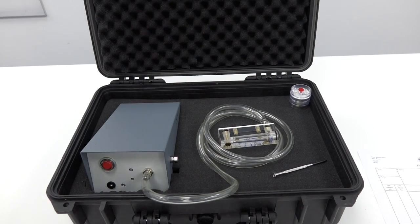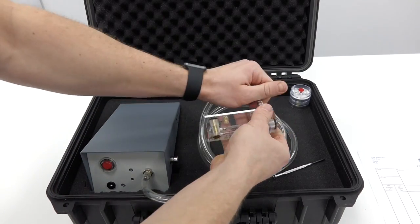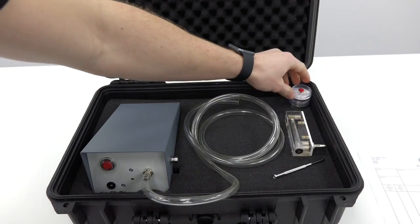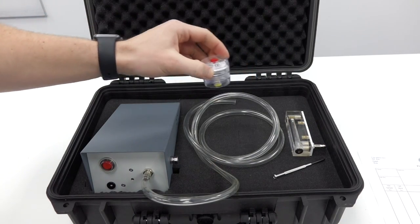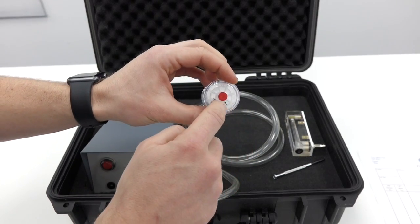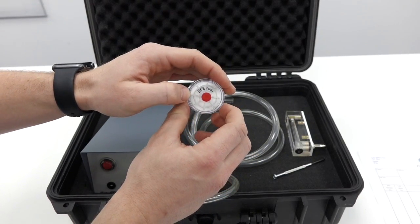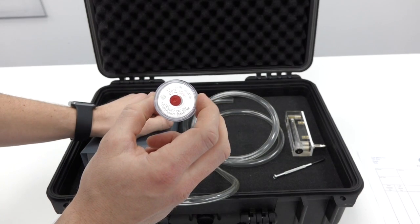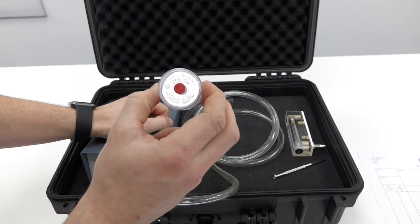I am ready to take a sample, so I disconnect my airflow meter and I am now going to insert my cartridge onto the pump. Make sure you record the serial number which is written on the cartridge and correctly fill in your analysis form saying where the test is being taken from.